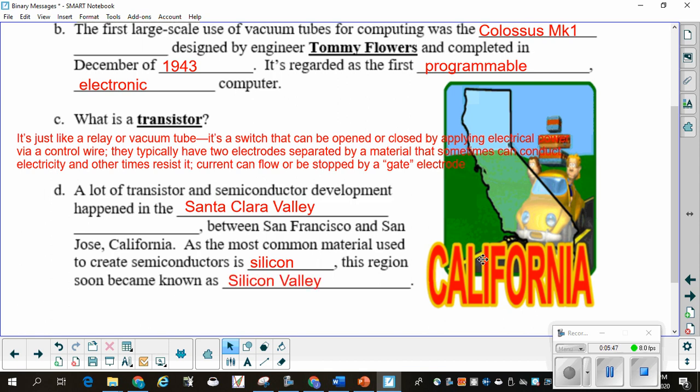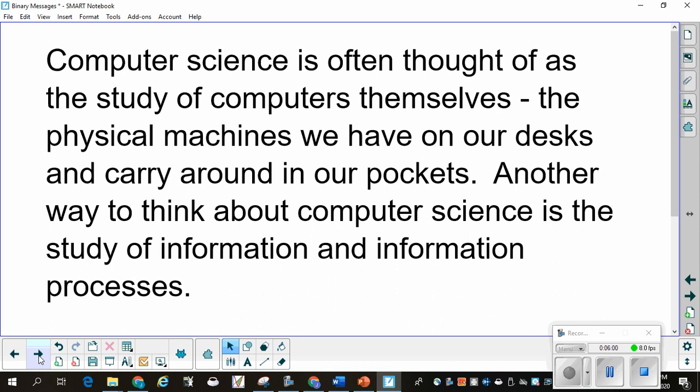And that was the crux of the video. And these are your notes. Now, computer science is often thought of as the study of computers themselves. The physical machines we have on our desks or those crazy cell phones or tablets that we carry around in our pockets or backpacks. Another way to think about computer science is the study of information and information processes.